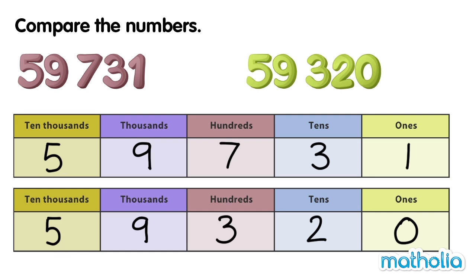Let's compare the digits in the 1,000s place. 9 and 9 — both numbers have 9 thousands. So, we move on to compare the digits in the 100s place.